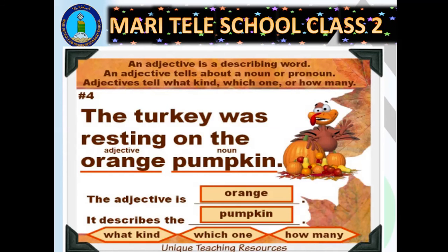An adjective is a describing word — that means it describes something. An adjective tells about a noun or pronoun. You all know what a noun is: it is the name of a person, place, animal, or thing. A pronoun is a word like he, she, it, you, we — which are used instead of a noun. You have done both nouns and pronouns in your previous class. So an adjective is a word that tells us about a noun.